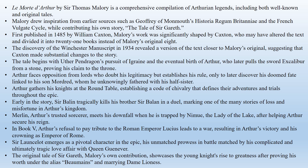Arthur establishes his reign and faces challenges from other lords who doubt his legitimacy. He learns of his true heritage and destiny, but also discovers that he has unknowingly fathered a child, Mordred, with his half-sister, who is destined to bring about his downfall. Arthur unites his knights at the Round Table, establishing a code of chivalry. The early books recount various adventures, including the story of Sir Balin, a knight who tragically kills his brother Sir Balan in a duel due to mistaken identity.